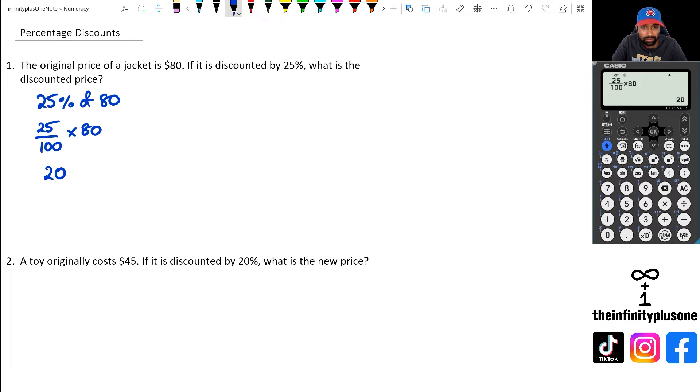So 25% of 80 is 20, that 20 is the discount money that's being taken away. So that means the new price is going to be 80 take away 20, which is equal to 60.